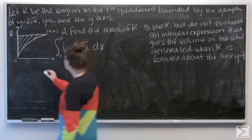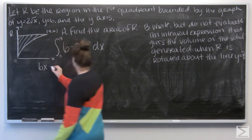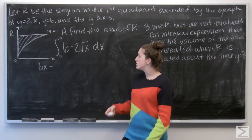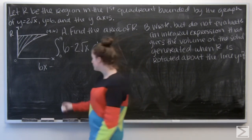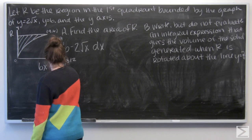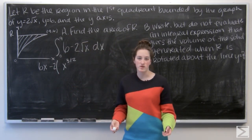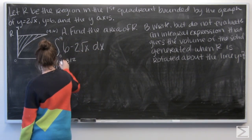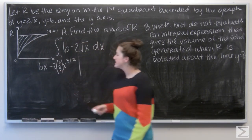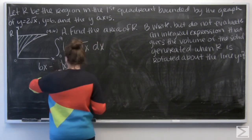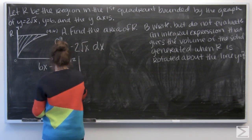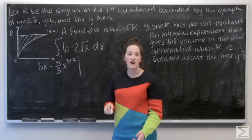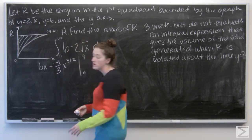When I integrate 6 I get 6x. I can write 2 square roots of x as 2x to the 1/2. Adding 1 to the exponent gives x to the 3/2, and dividing by that exponent means multiplying by 2/3. So the antiderivative is 6x minus (4/3)x to the 3/2, evaluated from x equals 0 to x equals 9.